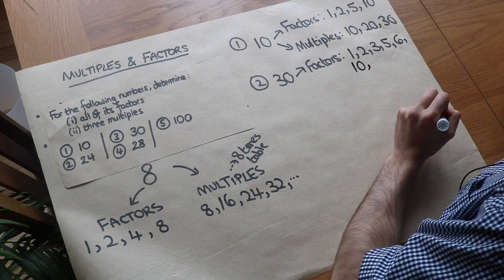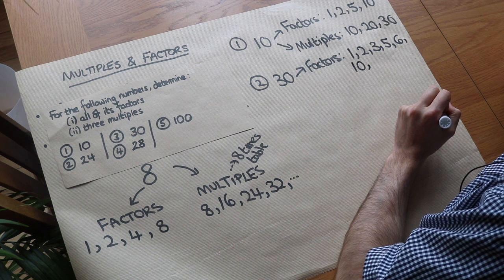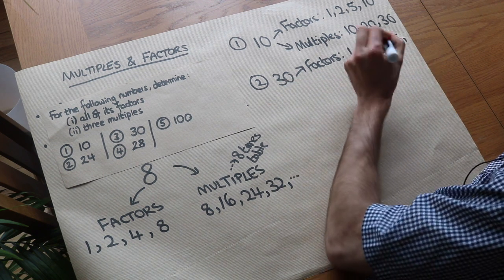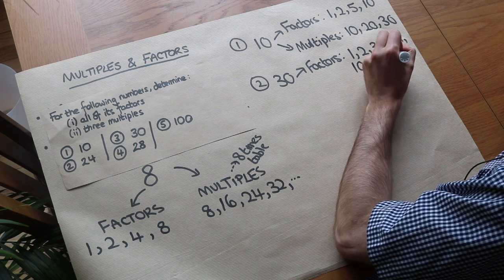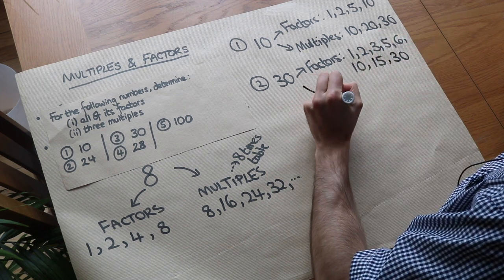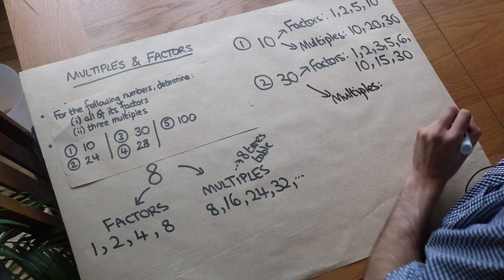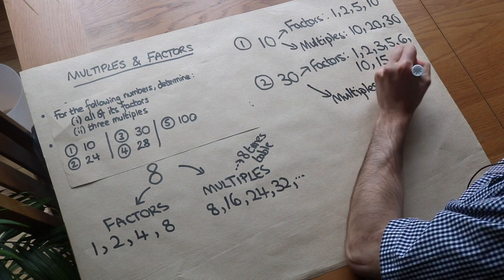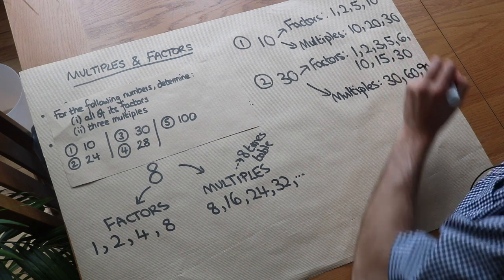Continuing: 11, 12, 13, 14 — all no. 15? Yes, 15 does go into 30. Because we're now at the halfway mark, we can go up to 30 as the last factor. For multiples, we just do the 30 times table: 30 times 1 is 30, 30 times 2 is 60, 30 times 3 is 90, and so on.